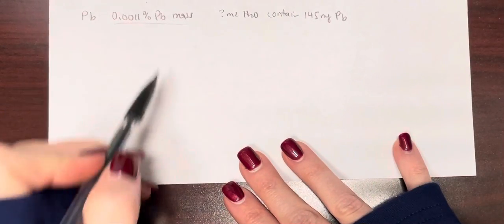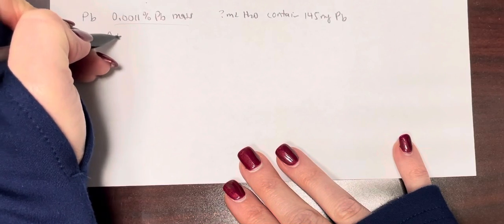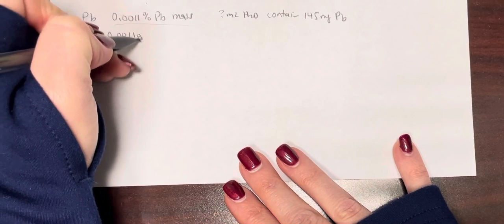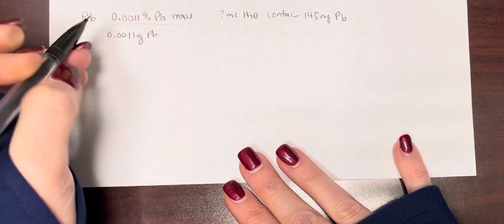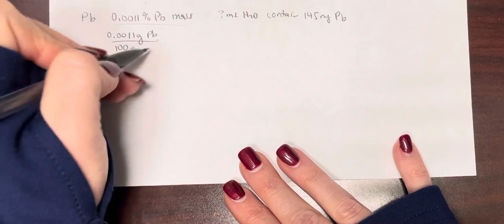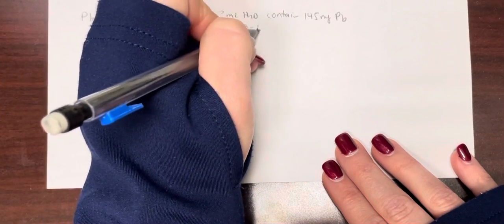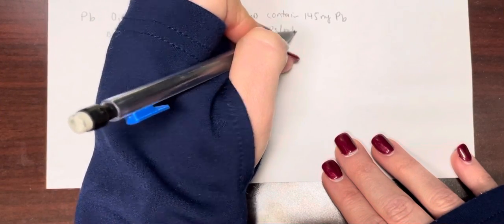Okay, so let's define this out real quick—that's going to be the key to the problem. This tells us that 0.0011 grams of lead is present in every 100 grams of solution. It also tells us that the density is 1 gram per milliliter.